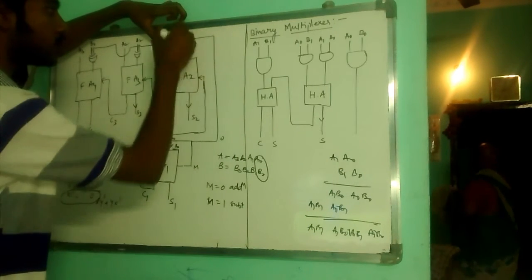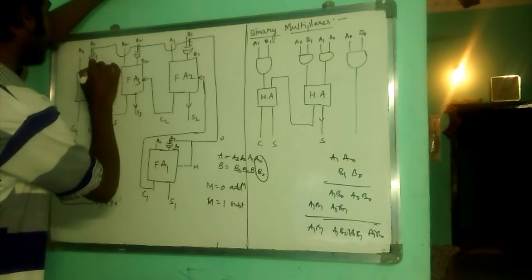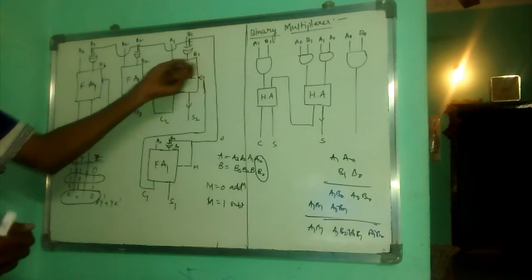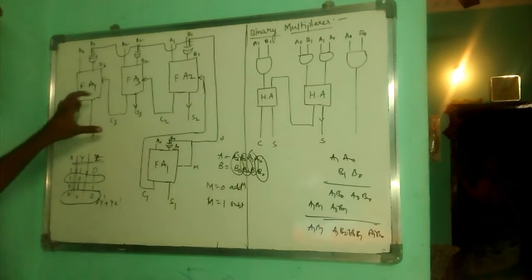So, whenever M is 0, here will be the B1, here is B2, it is B3. A1, B1 is added again, A2, B2 is added here, A3, B3 is added here.